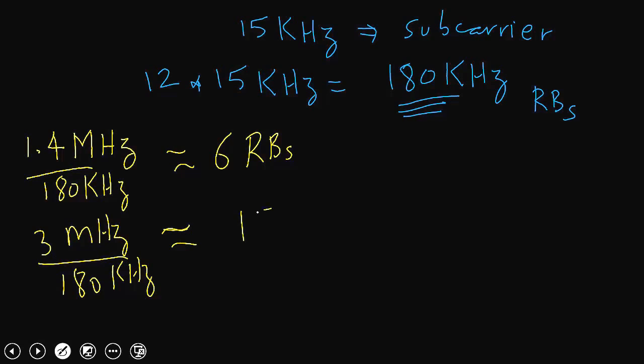Now if you are trying to do the math on your own, you will say when I divide 1.4 megahertz by 180 kilohertz, I get approximately 7 resource blocks, then why do I write 6? And same is the case for 3 megahertz. The reason is some of the resource blocks are used for guard period, so that's why we use the approximate number of resource blocks which are used for the actual channel bandwidth.